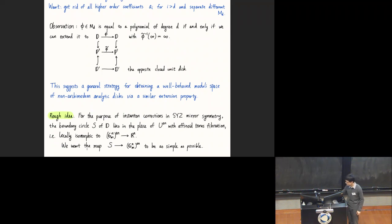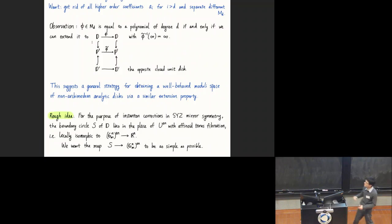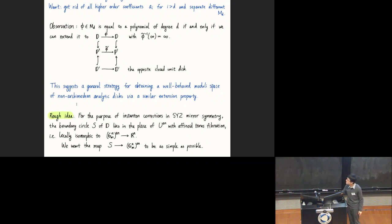They lie in places locally isomorphic to the standard form, which is simply an identification of the algebraic torus to R^n given by coordinate-wise valuation. We have a circle mapping to the analytification of the algebraic torus—this is really just a higher-dimensional generalization. Before, we considered a circle or disk mapping to the disk; now it goes to some higher-dimensional product. Both the circle and this target are in standard form, and we want this map to be as simple as possible. We impose the same extension property: it extends in the torus, and the furthest it can go is to some toric boundary of some toric compactification.